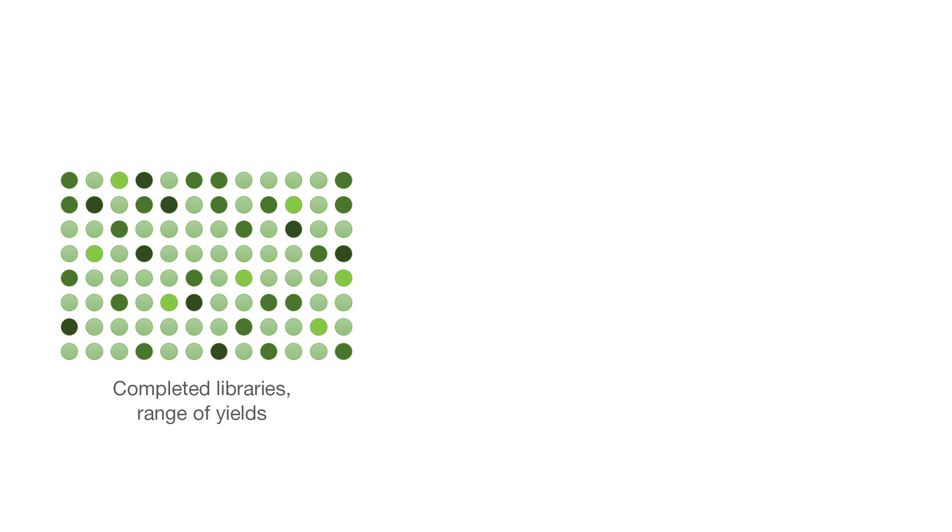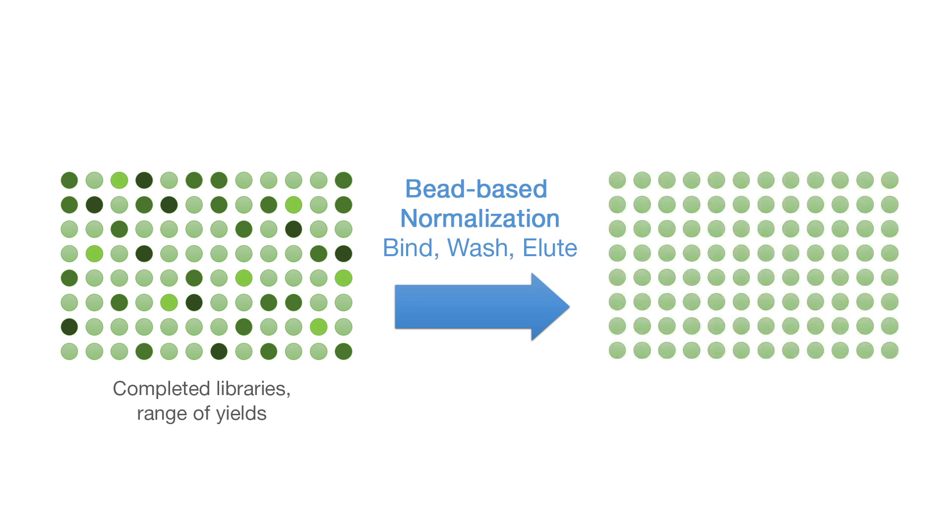In this process, libraries are added to normalization beads. These beads contain a specific number of binding sites. The final eluted library is normalized and can be pooled with other normalized libraries at a one-to-one ratio by volume. The library is now single-stranded and ready to load onto the Illumina sequencing system. This process is optimized primarily for use with our MiSeq systems.